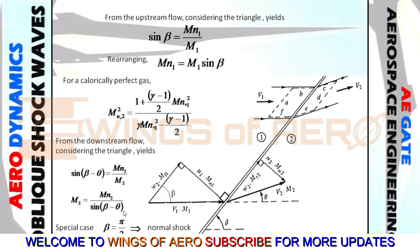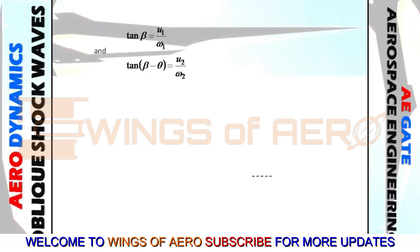Here is a special case: when beta equals pi over 2, that is 90 degrees, the shock wave becomes perpendicular to the flow — which we recognize as a normal shock wave. This is another important concept. Using a similar triangle approach with tan(beta) and tan(beta minus theta) for upstream and downstream, and equating them, gives a useful expression.